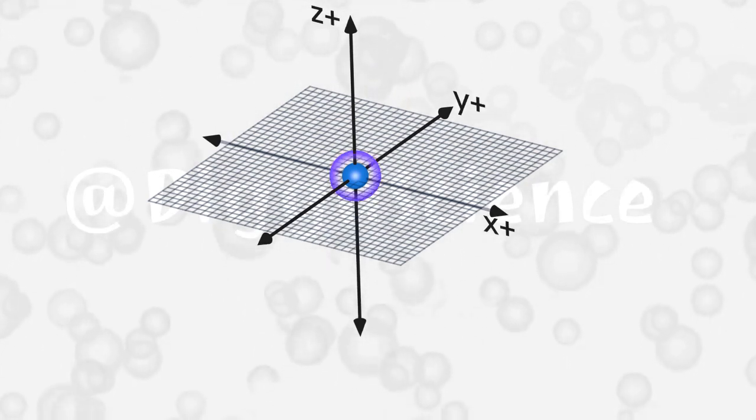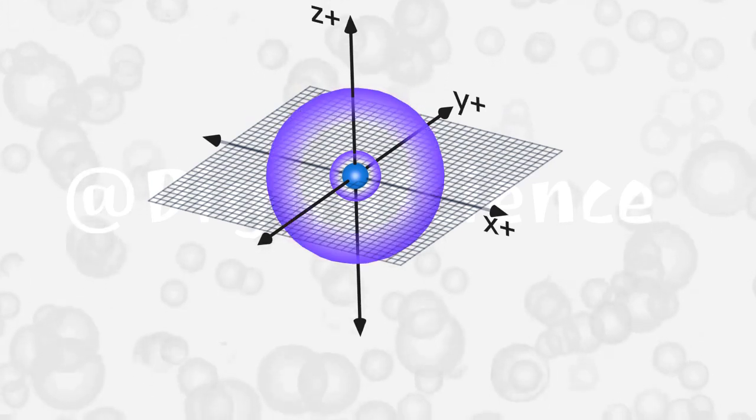In the K shell there is an orbital, the S orbital. In the L shell there are two orbitals, the S orbital, and the P orbital.